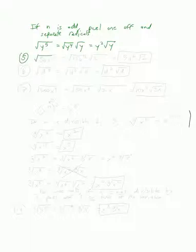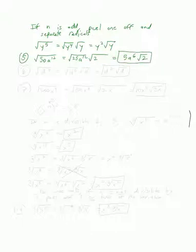Let's try the square root of 50a to the twelfth. We do the nice piece and the not-nice piece. First we look at 50 — the largest perfect square that goes in is 25, with 2 left over. Then we look at the a's: since a to the twelfth is even, we can put all of them in the nice piece with none on the right side. We're left with 5a to the sixth times root 2. That is our answer.